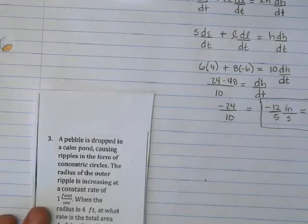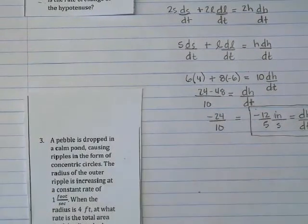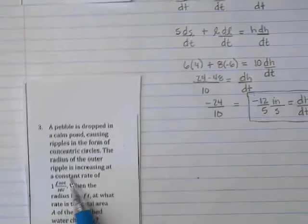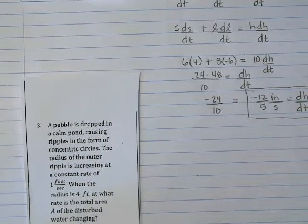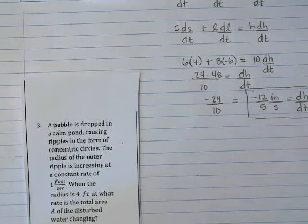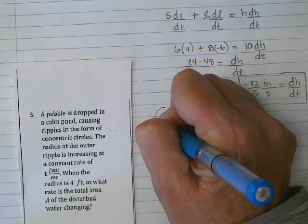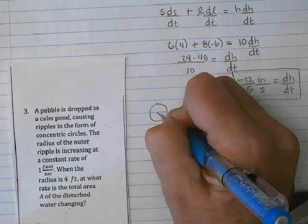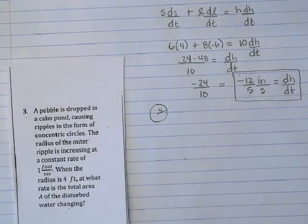Let's look at number 3 here. So here we have the classic pebble dropped in a compound, causing concentric circles. We have the radius of the outer ripple increasing at a constant rate of 1 foot per second. When the radius is 4 feet, at what rate is the total area of the disturbed water changing? So let's get our picture. This is just a snapshot, right? The little rock goes in the middle, it's going out. But they told us we're at the particular time when R is 4.